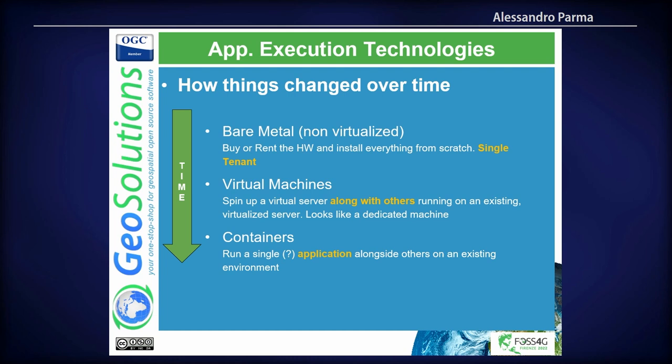How things have changed: the way we used to deploy applications a long time ago — though it's still used these days — was with bare metal servers, where you actually had to buy or rent the hardware from a provider. Then you would deploy the entire stack yourself, starting from the operating system, then deploying your applications on top. The server would only host your application, and it's yours only — not multiple applications.